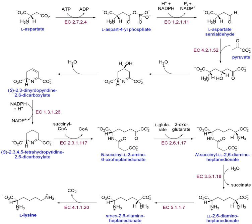In contrast to uracil, thymine bases are found mostly in DNA, not RNA. Cells do not normally contain thymine bases linked to ribose sugars in RNA, indicating that cells only synthesize deoxyribose-linked thymine. The enzyme thymidylate synthetase is responsible for synthesizing thymine residues from dUMP to dTMP. This reaction transfers a methyl group onto the uracil base of dUMP to generate dTMP. The reaction is: dUMP + 5,10-methylene tetrahydrofolate → dTMP + dihydrofolate.